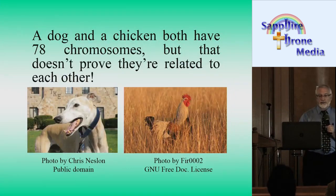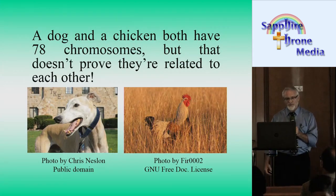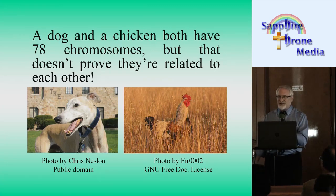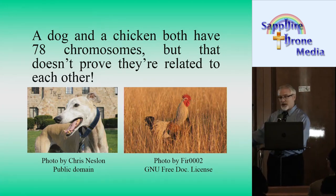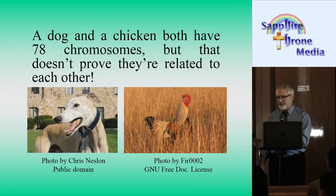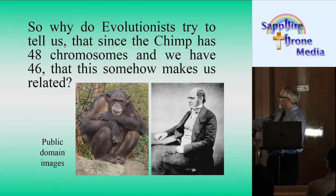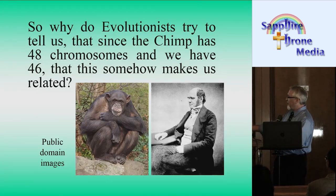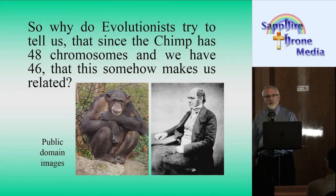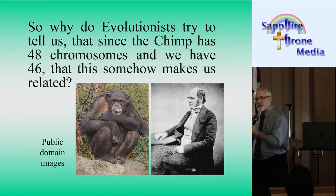A dog and a chicken both have 78 chromosomes, but that doesn't prove they're related to each other. Chimps have 48 chromosomes; humans only have 46. So a dog and a chicken actually have more chromosomes than we do.